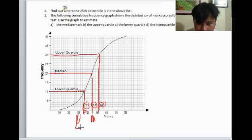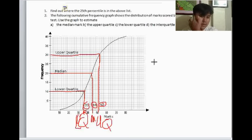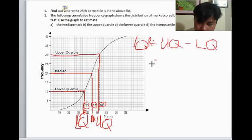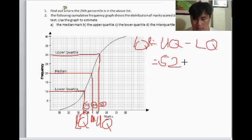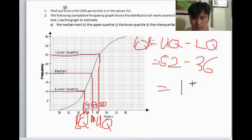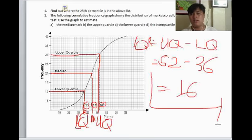Our interquartile range can be found by using this formula: upper quartile minus lower quartile. Our upper quartile is 52 and our lower quartile is 36. Our answer is 16. So 16 is our interquartile range. That's all, and thank you.